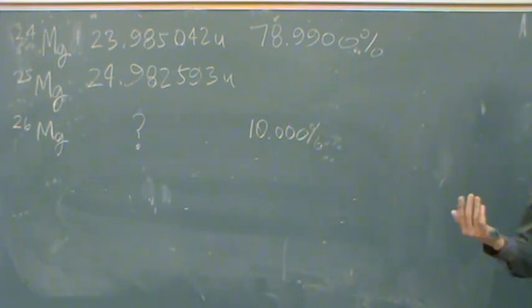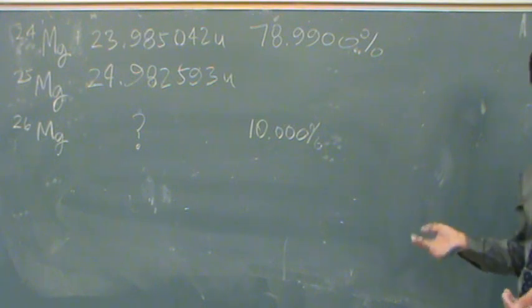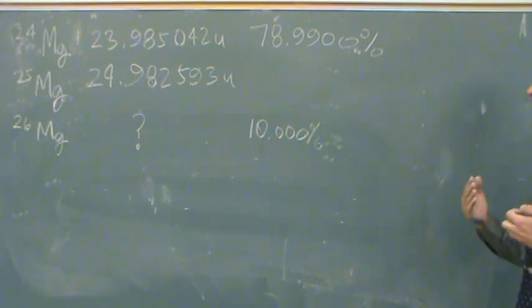You pretty much have an unlimited number depending on what the isotope problem is. So we did one with mercury and I think I had like seven of them. It can get even worse than that, but the number of them doesn't necessarily make it hard.